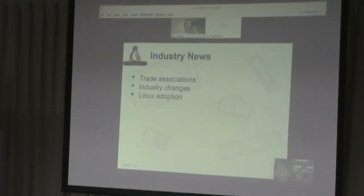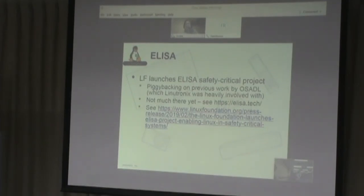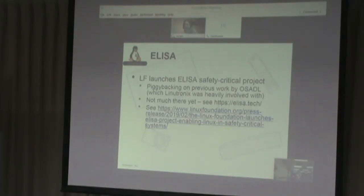Some industry news I thought was interesting: the Linux Foundation always has a whole bunch of projects. One that really interested me was ELISA, a safety-critical project that started in February. People have been talking about safety-critical Linux for a long time, and it's nice to see a project actually working on this in a formal way, piggybacking on previous work by an organization in Europe called OSADL. The Civil Infrastructure Platform has announced a new long-term support kernel based on 4.19 — actually a super long-term support, I think for six years — and they also created a new security work group.